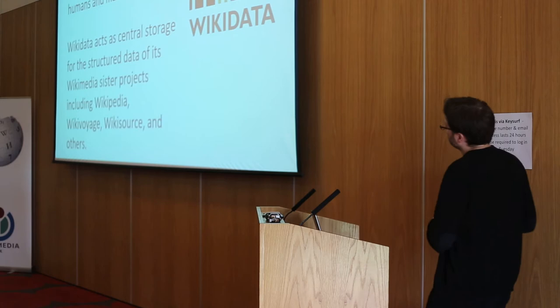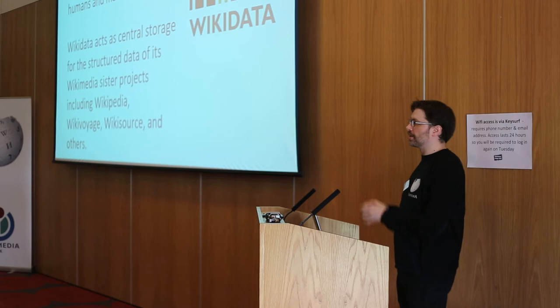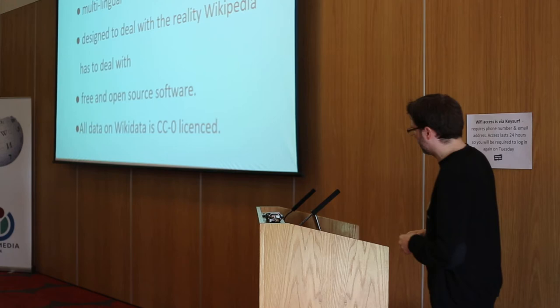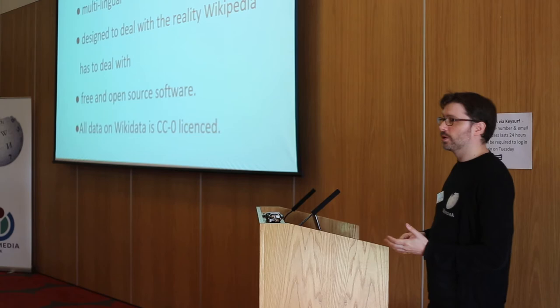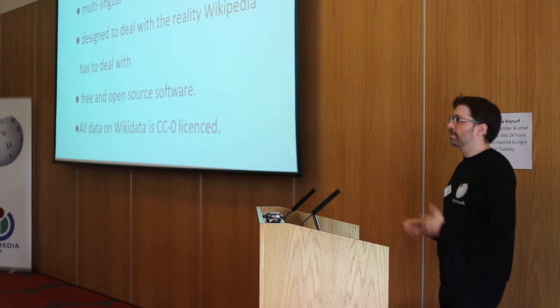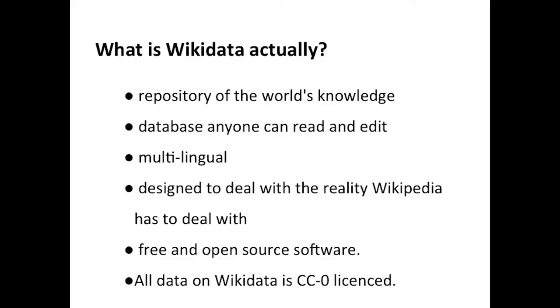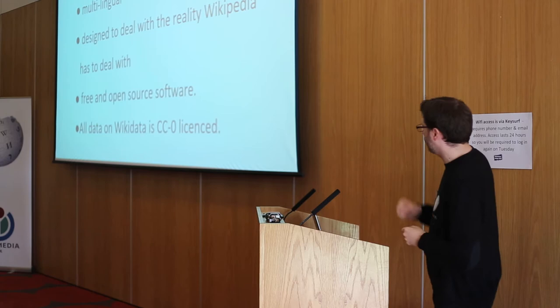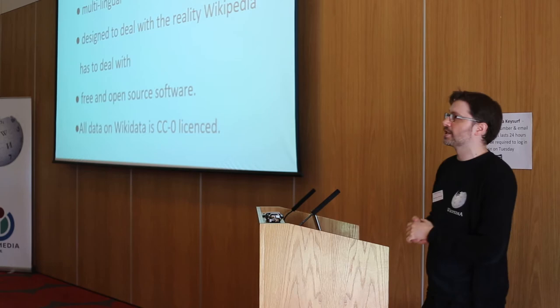All of that structured data can be held in one place and used in any way you see fit — it's all public domain. Wikidata is a repository of the world's knowledge: a database that anyone can read and edit, multilingual, designed to deal with the reality Wikipedia has to deal with. For example, you could have three sources providing three different dates of birth for the same person, and Wikidata can cope with that. It's free and open source software, and all data on Wikidata is CC0 licensed, meaning there's no restriction on its use.